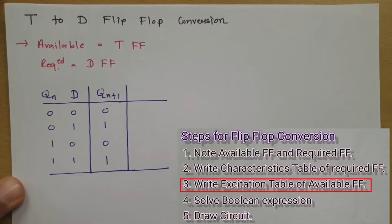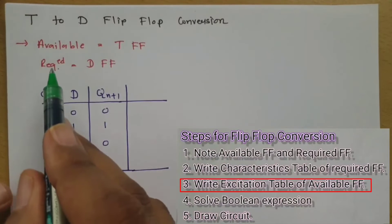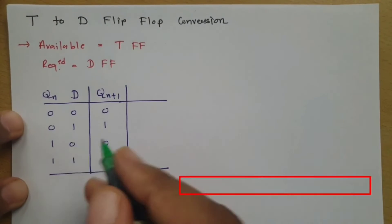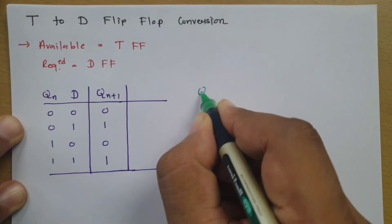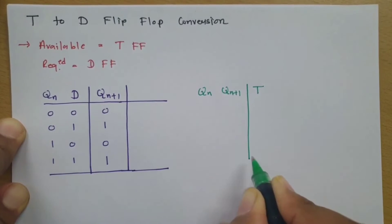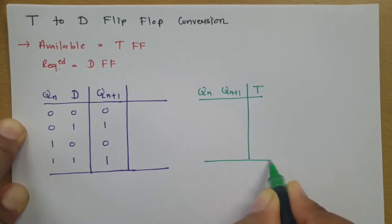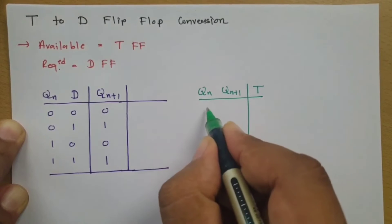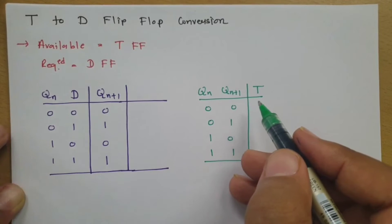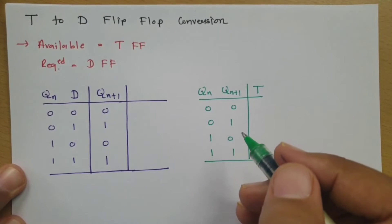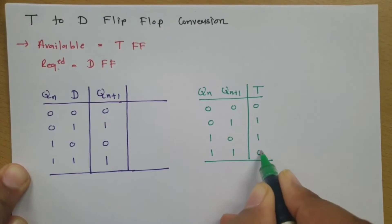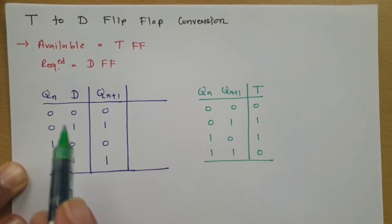The next step is to write the excitation table of the available flip-flop, which is the T flip-flop. The excitation table shows Qn and Qn+1 with respect to the T input. There are 4 combinations of Qn and Qn+1, and observing the excitation table of the T flip-flop, the T values are 0, 1, 1, 0.